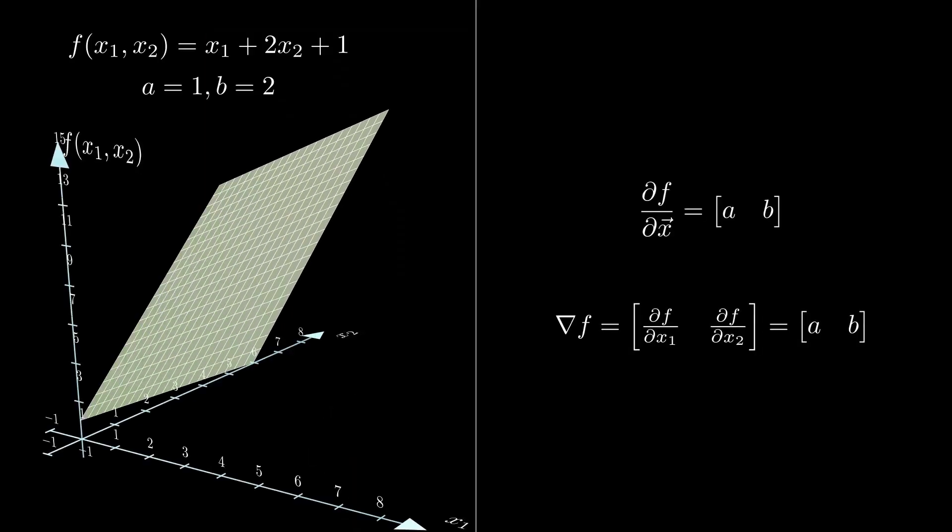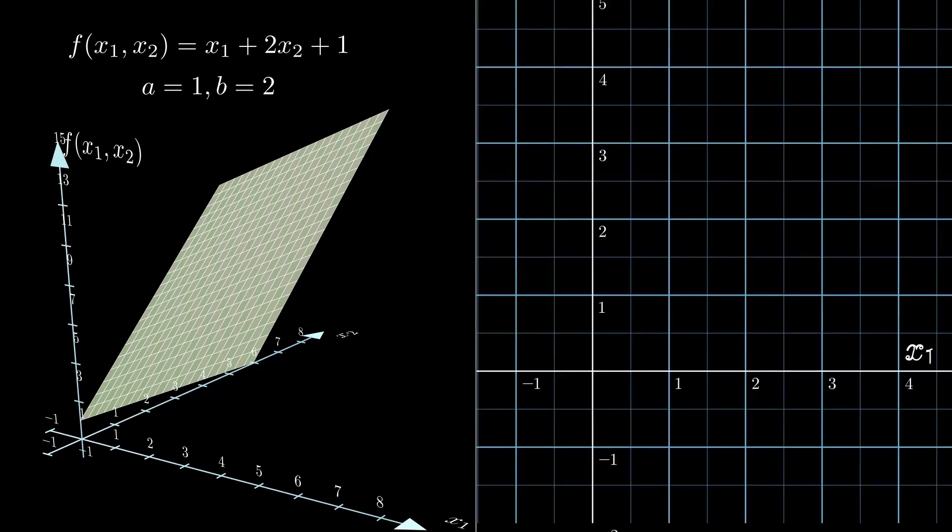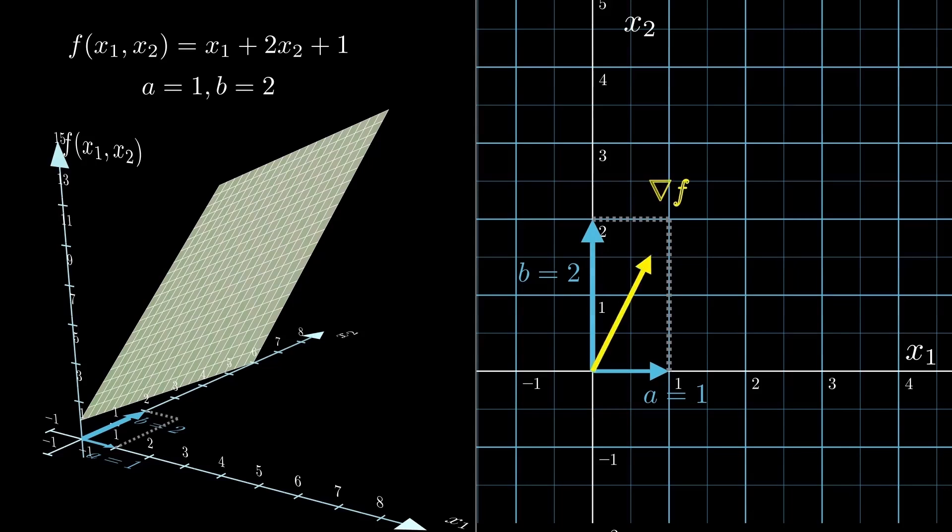Okay, let's start with the direction of the gradient. Remember, the gradient means taking the derivative of f with respect to the vector x. In other words, it's just the vector you get by writing down all the partial derivatives one by one. Here, since a = 1 and b = 2, the gradient comes out to [1, 2]. On the left we'll look at it in 3D, and on the right in 2D. I've marked the x1 component 1 in blue and the x2 component 2 also in blue.